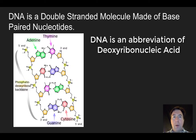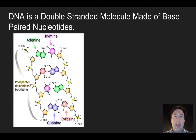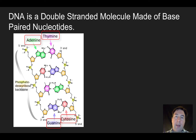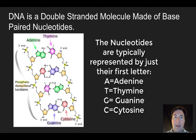One of the big things to know is that DNA, or deoxyribonucleic acid, is a double-stranded molecule made of base pairs of nucleotides. As we can see in this diagram, there are four nucleotides: adenine, thymine, cytosine, and guanine. These are the four nucleotides associated with DNA.